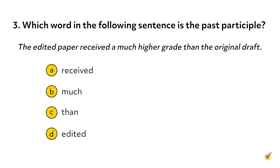Number three: which word in the following sentence is the past participle? 'The edited paper received a much higher grade than the original draft.' The correct answer is D. The verb 'edited' is acting as an adjective describing the word 'paper,' so 'edited' is a past participle. Though the word 'received' does end in -ed, it is acting as a normal past tense verb in this sentence. Alright, that's all for this review. Thanks for watching and happy studying.